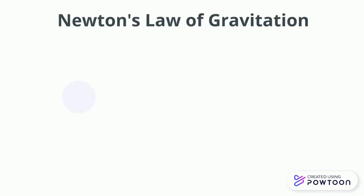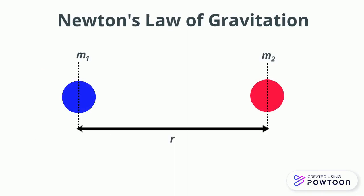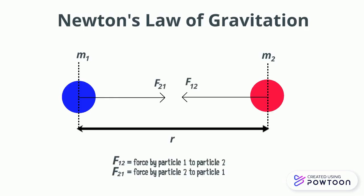For the example, we have two masses, M1 and M2. The distance between the masses is R and the attractive force between the two masses is F21 and F12.